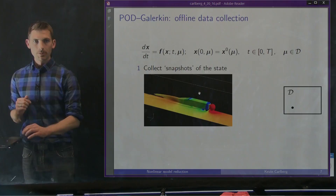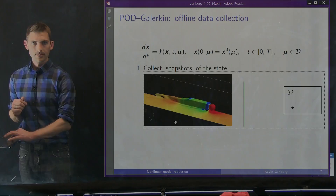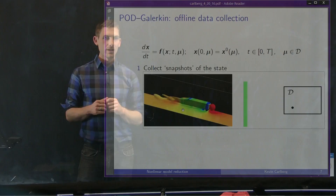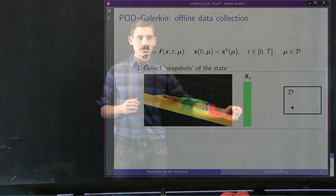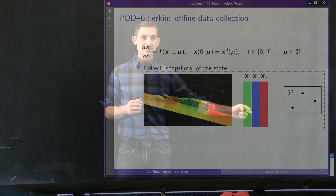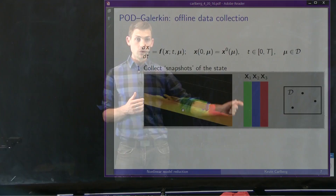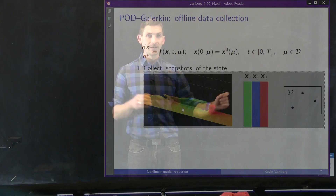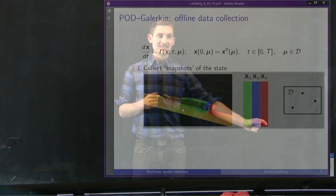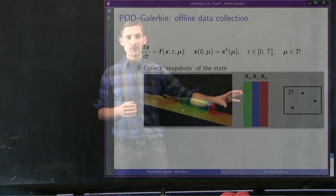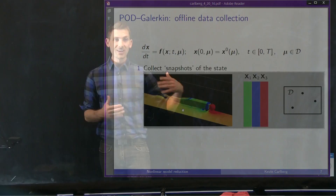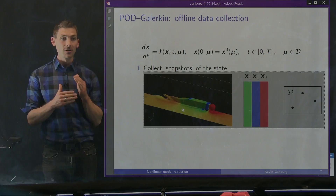We pick one point in our parameter space and run a transient dynamic simulation. Each column of the snapshot matrix is the state vector at a given time instance — if we run a thousand time steps, this matrix is 10 million by a thousand. We can repeat this at a second and third point in the parameter space. This snapshot matrix encapsulates all the information ever observed over both time and parameter variation during this training stage — similar to machine learning, this is a training stage where we exercise our full-order model to characterize its dynamics.